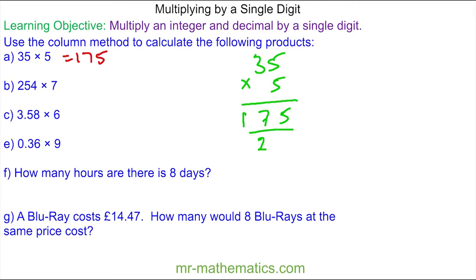Question B. 254 multiplied by 7. Again we've written it in the column method. So we have 4 times 7 which is 28. 2 tens and 8 units.